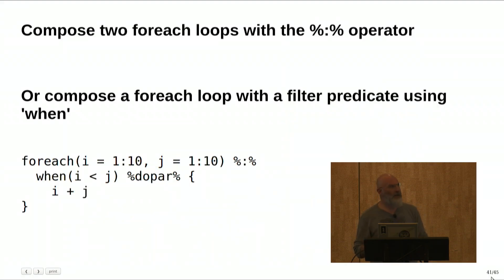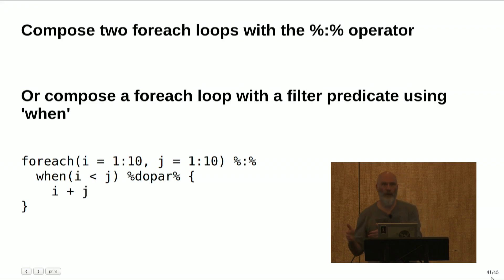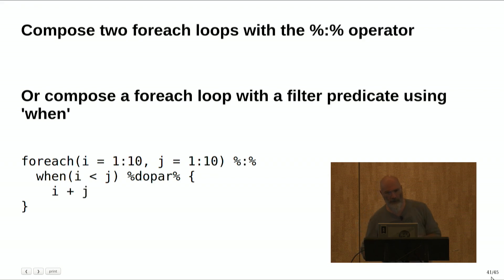There are a few more interesting things about foreach. You can compose two foreach loops together with a composition operator to produce a third foreach loop, which is really useful for nested parallelism. Going back to Haskell-y ideas, you can compose a foreach loop with a predicate filtering operation — the when function — to produce a set comprehension, which Steve was very much into.